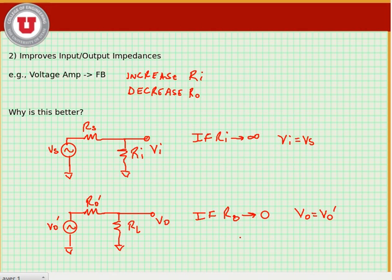Feedback what we'll see will improve the conditions of the input and the output of the circuit. And depending upon the type of feedback we use, we can either increase input resistance or decrease input resistance. And similarly, depending on the type of feedback, we can either increase or decrease the output resistance.